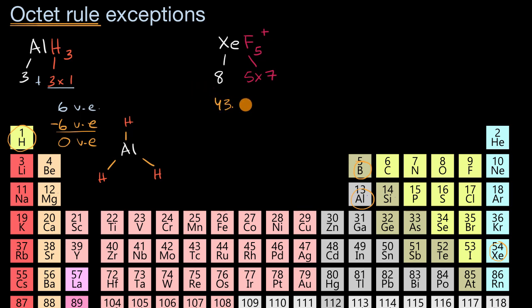But we have to be careful. This is a cation, it is a positively charged molecule with a positive one charge. So we have to take one electron away because of that. So let's take away one valence electron to get that cation, and we are left with 42 valence electrons.